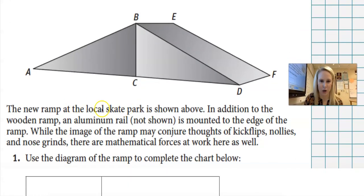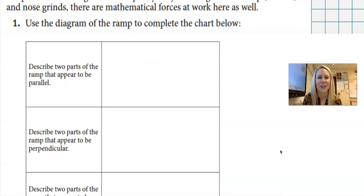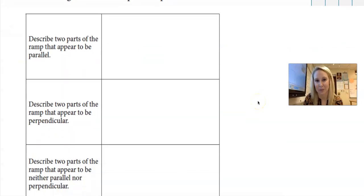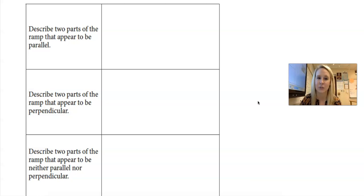So we've got a new skate park ramp shown above. I cannot skateboard to save my life. In addition to a wooden ramp, an aluminum rail, not shown, is mounted to the edge of the ramp. While the image of the ramp may conjure thoughts of kickflips, nollies, and nose grinds, there are mathematical forces on here as well. You're going to look at the diagram of the ramp and complete the chart below. So describe two parts of the ramp that appear to be parallel. Describe two parts of the ramp that appear to be perpendicular. And then describe two parts of the ramp that appear to be neither of the two.